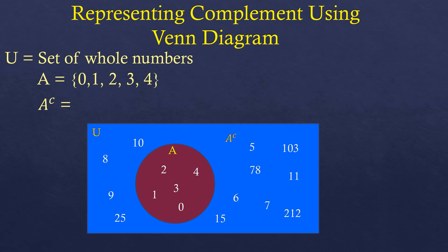So what are those elements? There are infinitely many, so here are a few examples: 5, 6, 7, 8, 9, 78, 212, and so on. The elements 0, 1, 2, 3, 4 are not included because the complement of A contains all whole numbers except those inside set A. So the complement of A = {5, 6, 7, 8, 9, ...} and continues infinitely.